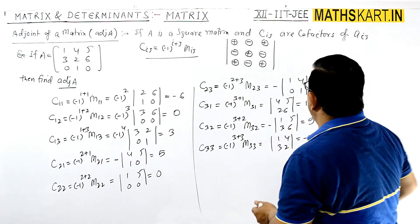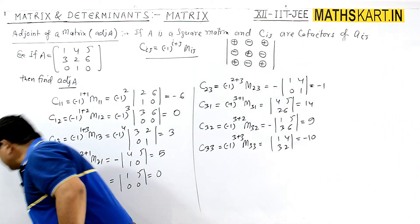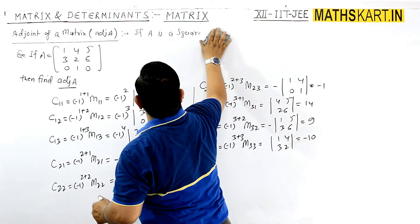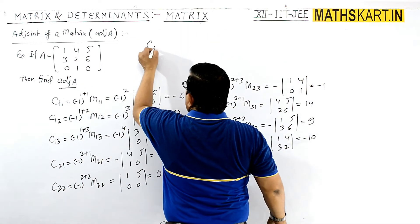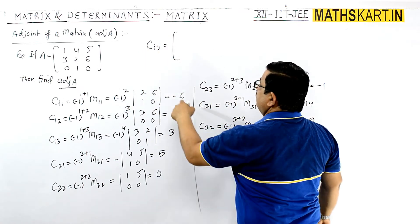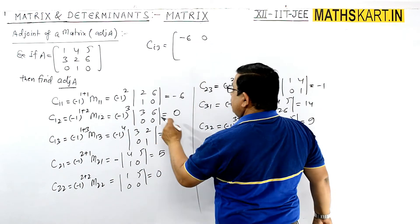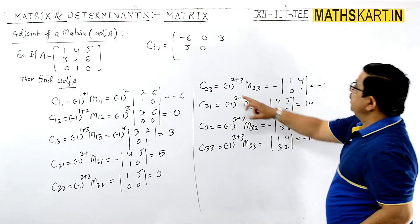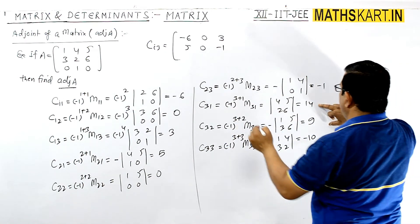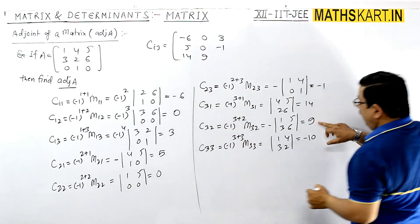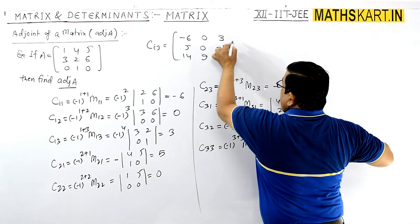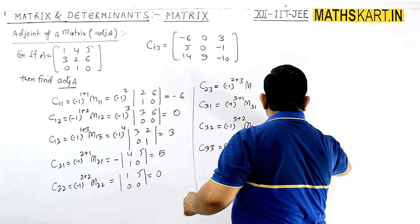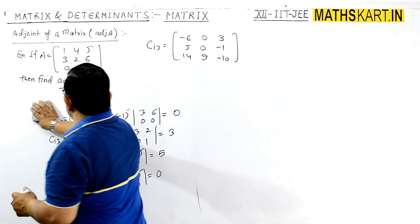We have got all the cofactors. Now write the matrix of cofactors C_ij: C_11 = −6, C_12 = 0, C_13 = 3; C_21 = 5, C_22 = 0, C_23 = −1; C_31 = 14, C_32 = 9, C_33 = −10. One more step: take the transpose of this matrix of cofactors to get the adjoint of A.